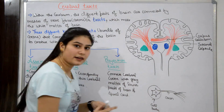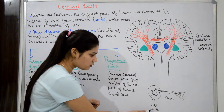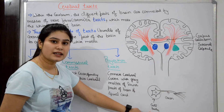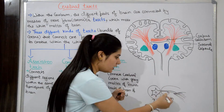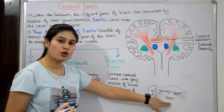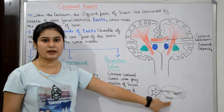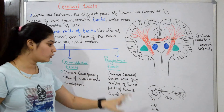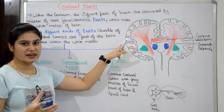This is the neuron diagram. The neuron's front portion is called the cell body. The cell body is the gray matter, and this is the inner part of the brain. This is called the axon. The axon is white matter.